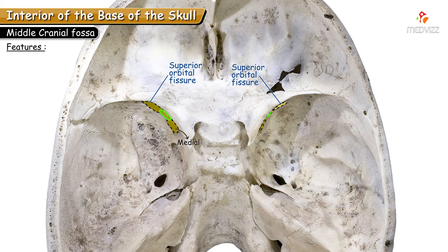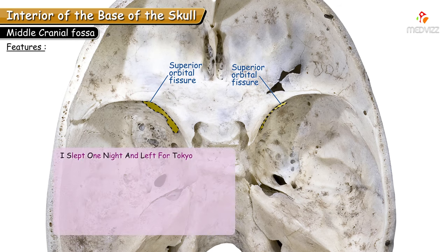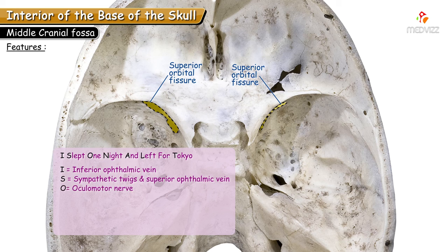The medial part of the superior orbital fissure transmits the inferior ophthalmic vein and small sympathetic nerve twigs along the vein. To remember all these structures, a mnemonic is: 'I slept one night and left for Tokyo.' I — inferior ophthalmic vein; S — superior ophthalmic vein and sympathetic nerves; O — oculomotor (third cranial nerve); N — nasociliary; A — abducent; L — lacrimal; T — trochlear.